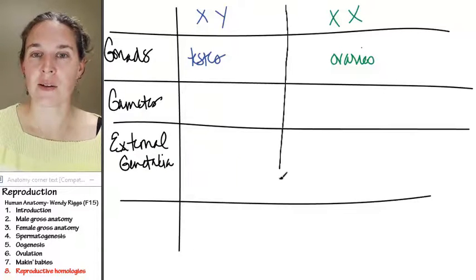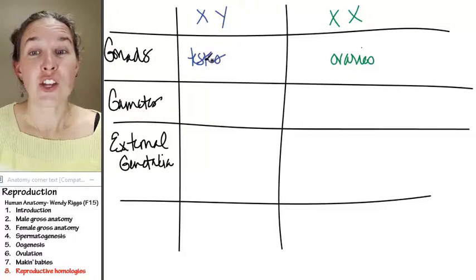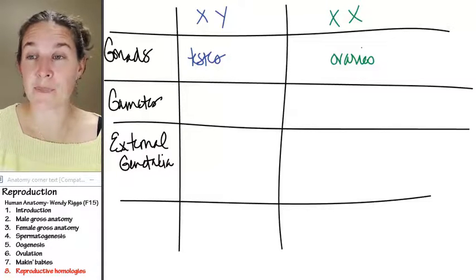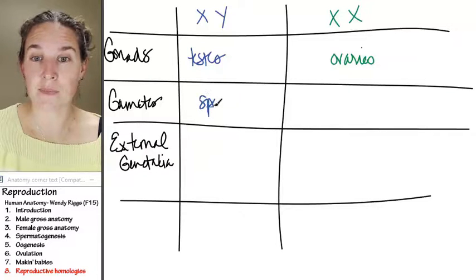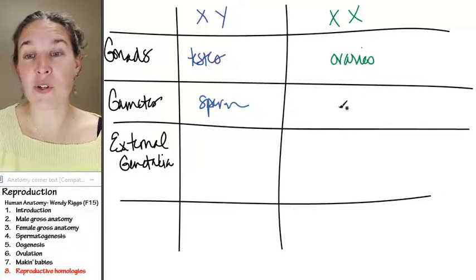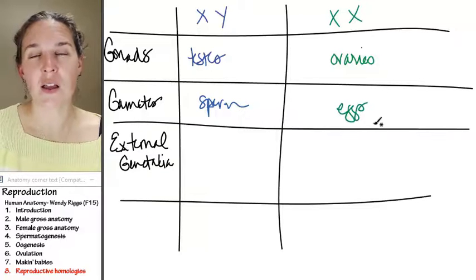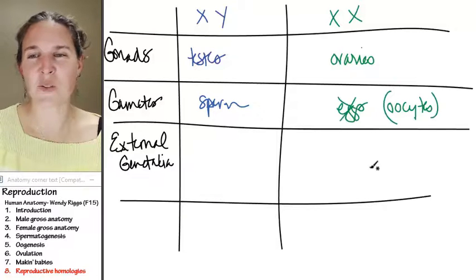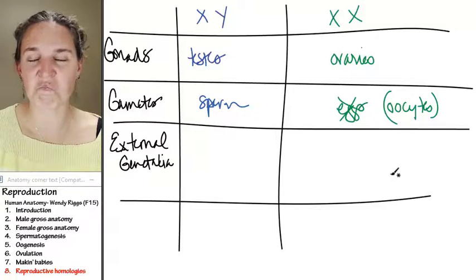Are you good? If you have an X and a Y, your testes will produce sperm. If you have two Xs, your ovaries will produce eggs. Should we just say oocytes of some flavor? Because eggs we only produce if we fertilize. That works for me.